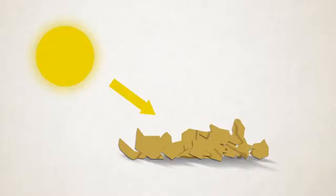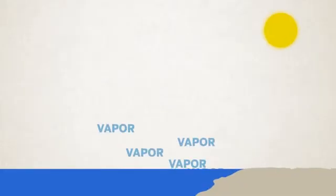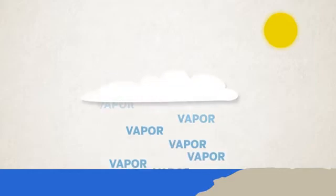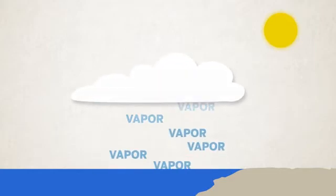But the Sun doesn't melt or break the rock directly. The process is more complicated than that. The Sun's energy warms the ocean and liquid water evaporates into water vapor in the air. Then the water vapor condenses into clouds and falls as rain or snow.